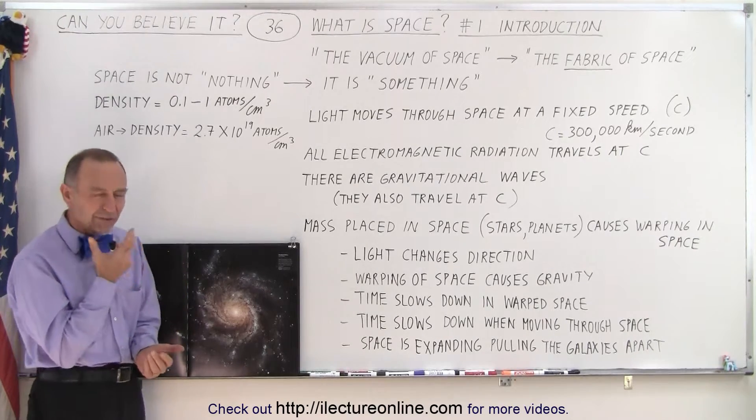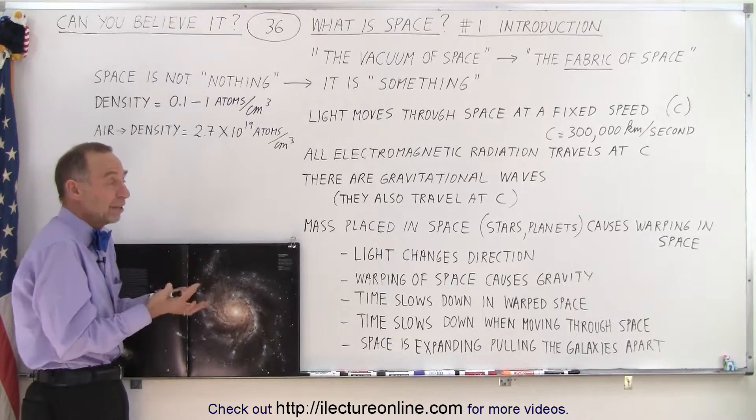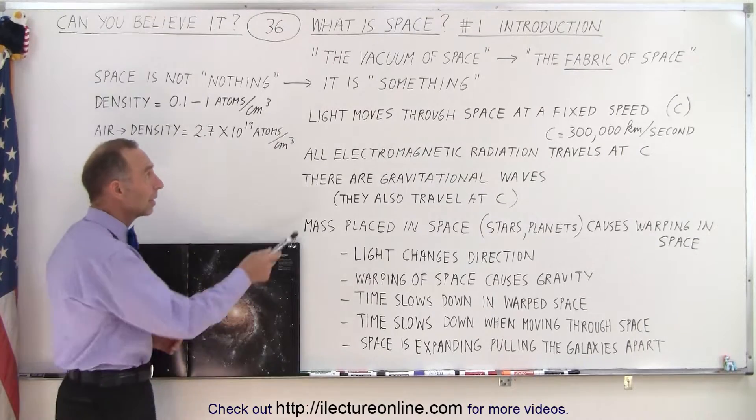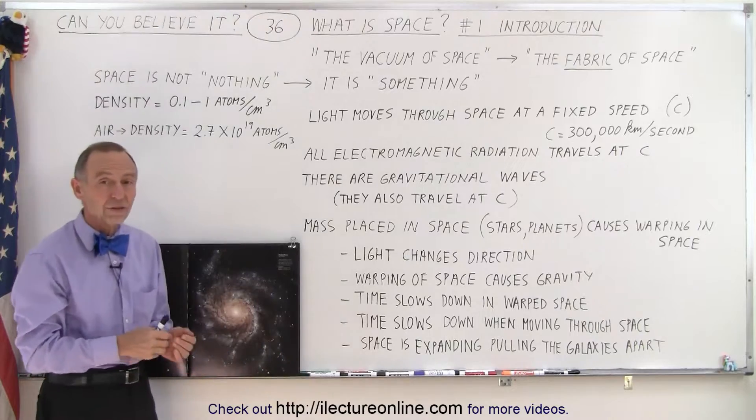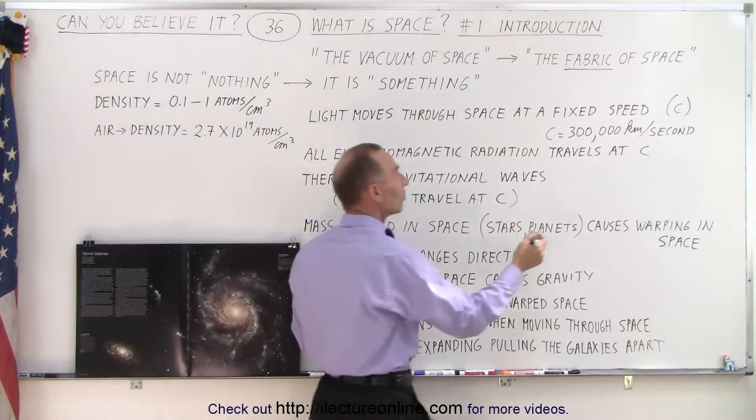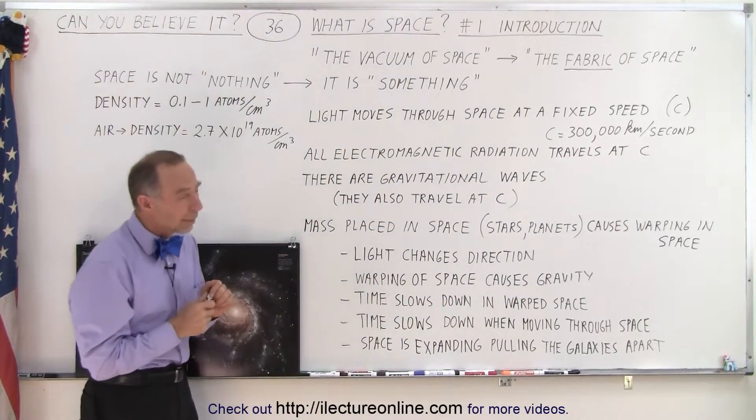So space has specific properties. And let's talk about some of the properties in general to get a feel of why we want to talk about what space is. For example, light moves through space but at a specific speed. We call that the speed of light.